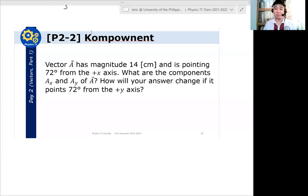Now, let's have another example. Component. Vector A has magnitude 14 cm and is pointing 72 degrees from the positive x-axis. What are the components Ax and Ay of A? How will your answer change if it points 72 degrees from the y-axis?